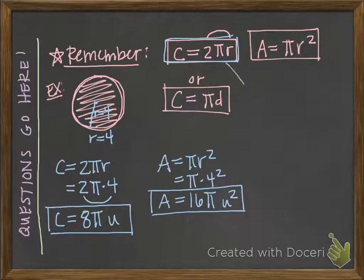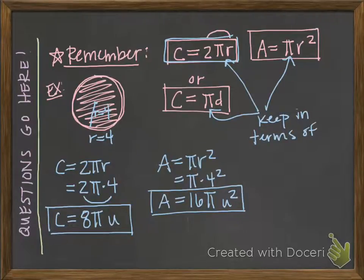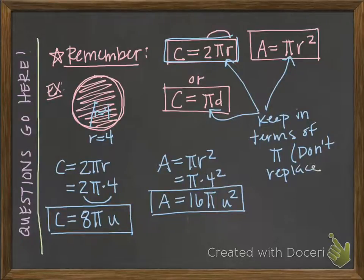Write yourself a note that whenever we use pi in this class, we will not replace it with 3.14. The way we say that is: we keep all of our answers in terms of pi. Just like when we learned how to express y in terms of x and x was in our answer, pi is going to be part of our answer. Keep in terms of pi means don't replace pi with 3.14 or 22 sevenths, which is the fractional equivalent. It's actually easier this way.